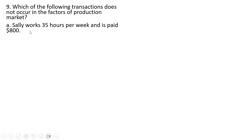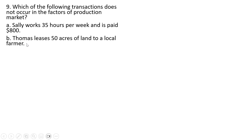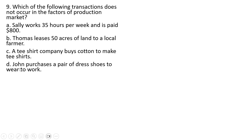Question 9: Which of the following transactions does not occur in the factors of production market? Sally works 35 hours per week and is paid $800 — that is a transaction that occurs in the factors of production market. Answer choice B is also a transaction that occurs in this market. Choice C is also an action that appears in this market. Answer choice D is a transaction that does not occur in the factors of production market — it occurs in the goods and services market. So answer choice D.